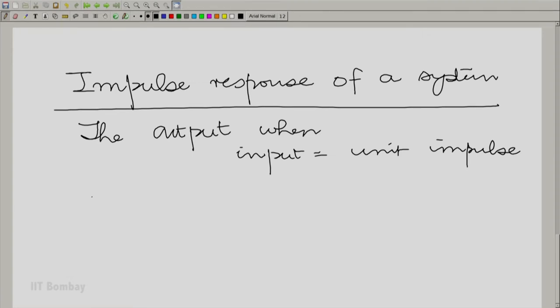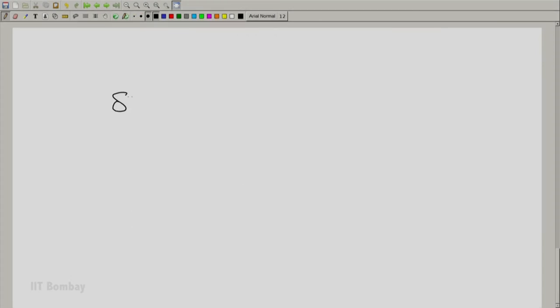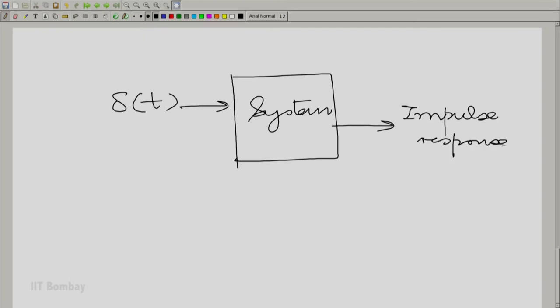That means that if I give a very narrow pulse as input and study the output as the pulse becomes narrower and narrower with an ever narrowing pulse. So delta t is given as the input to the system and the output we shall call the impulse response often denoted by h of t. This is a very standard notation used very frequently.